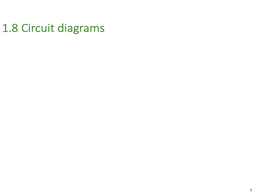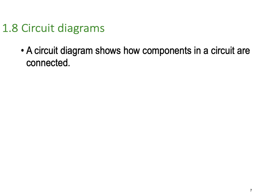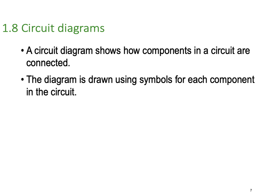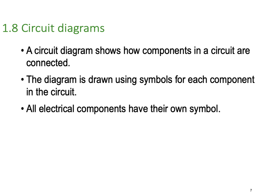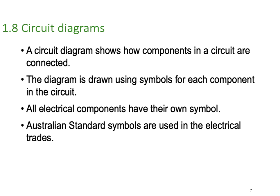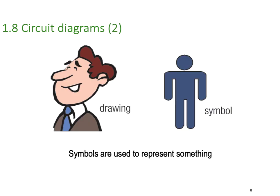So let's look at diagrams. A circuit diagram shows how components in a circuit are connected. The diagram is drawn using symbols for each of the components in the circuit. All electrical components have their own symbol, which are actually visible metaphors for what they do. Australian standard symbols are used for our electrical trades. A symbol is not an exact representation — a symbol is a visual metaphor.